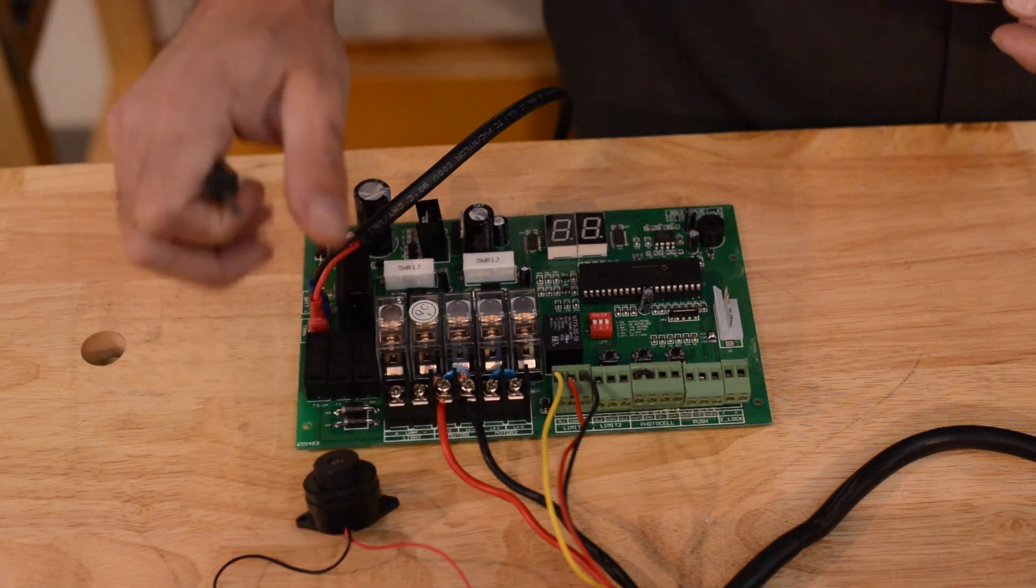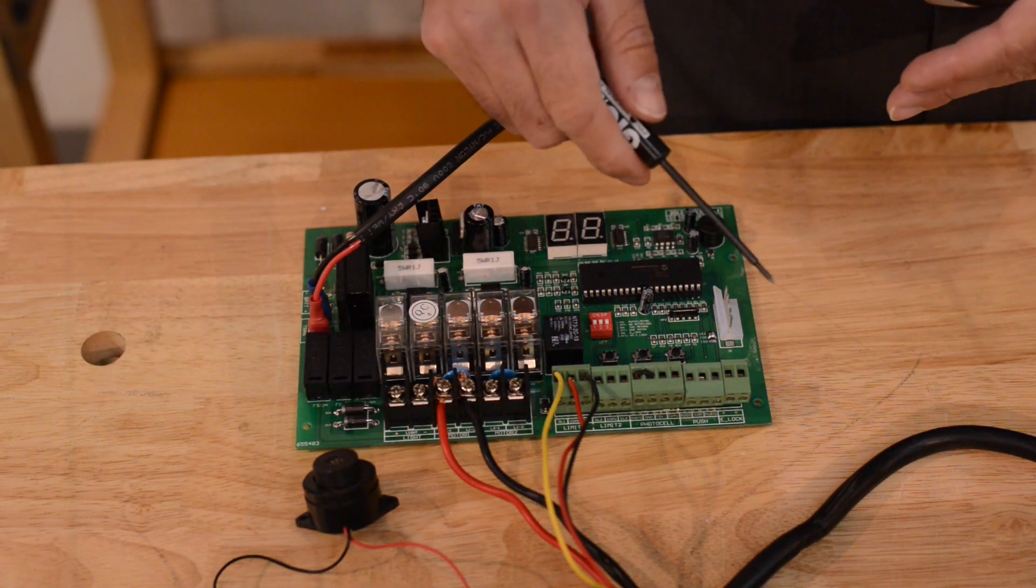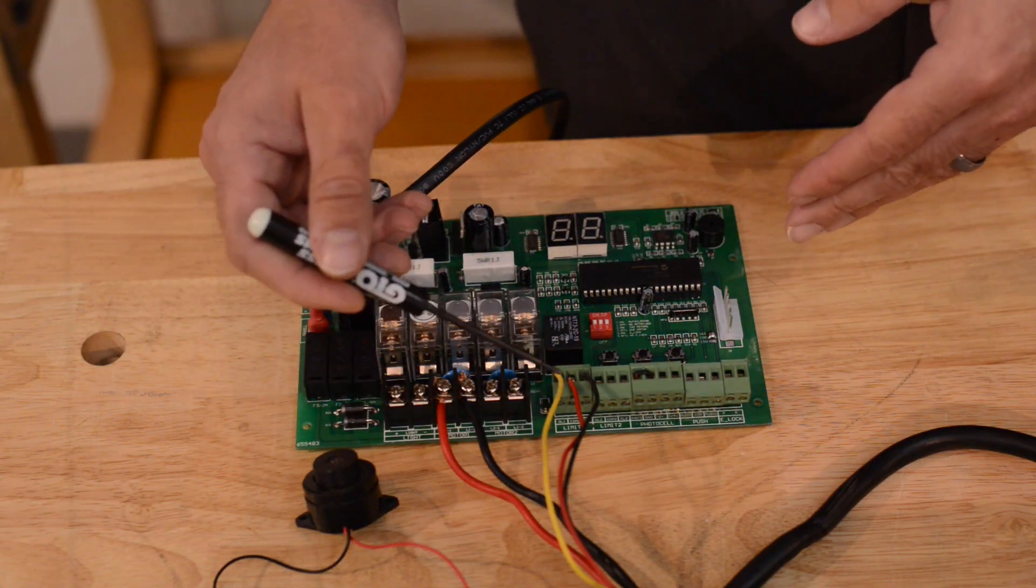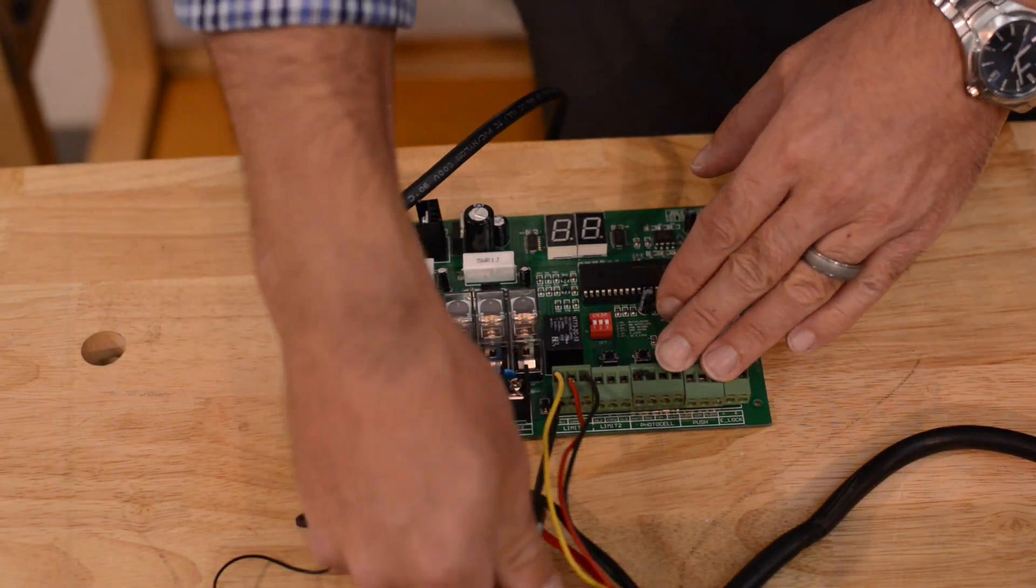We're going to use our buzzer to indicate the open limit switch. The wire that is in the first terminal, we have it set up for pull to open, is your open limit switch.